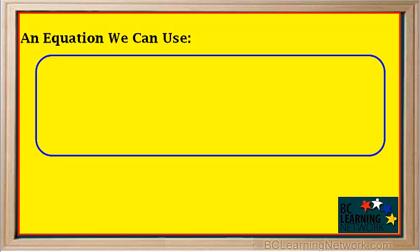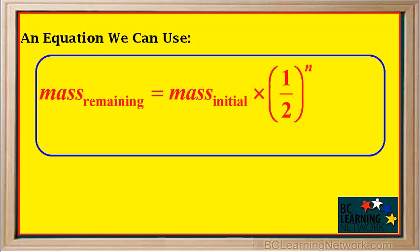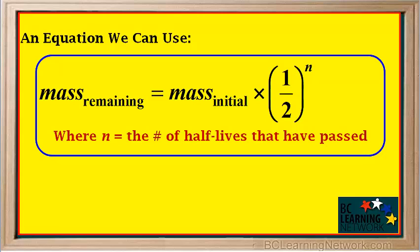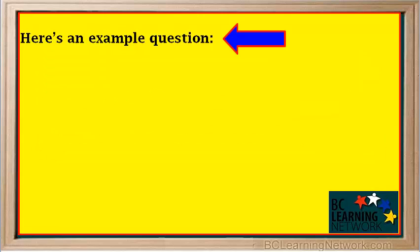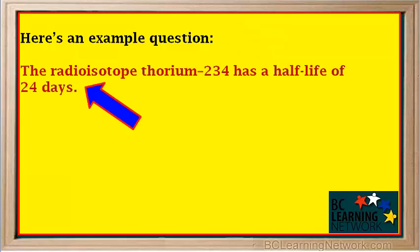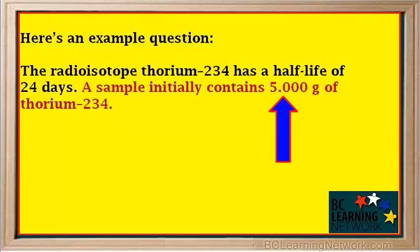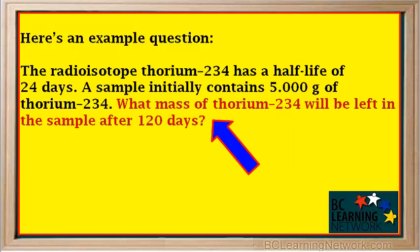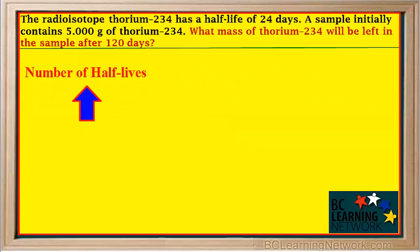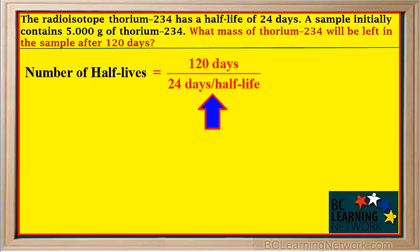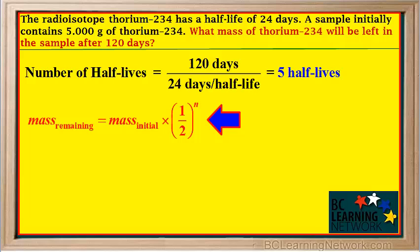There's also an equation we can use for similar questions: the mass of an isotope remaining is equal to its initial mass times (1/2) to the power n, where n is the number of half-lives that have passed since the initial mass was measured. The radioisotope thorium-234 has a half-life of 24 days. A sample initially contains 5 grams of thorium-234. What mass will be left after 120 days? We start by finding the number of half-lives: 120 days divided by 24 days per half-life gives 5 half-lives.